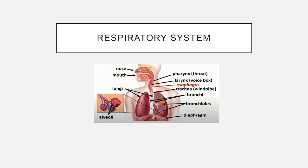The respiratory system has the nose, mouth, lungs, alveoli, pharynx or throat, larynx or voice box. The esophagus is not part of the respiratory system. It also includes the trachea or windpipe, bronchi, bronchioles, and the diaphragm.